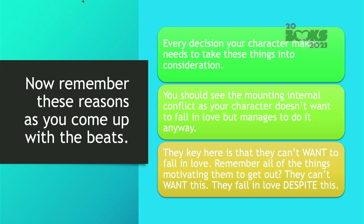Remember these reasons as you come up with your story beats. One of the problems I have seen in romances that aren't working is they have the reasons, but when the characters meet, they have this twitterpated moment and they don't put in those reasons. They don't color the scenes because of those reasons they can't be together — they have these sweet lovey-dovey moments, go on dates, and forget to put in the conflict. So every decision your character makes needs to take these things into consideration. You should see the mounting internal conflict as your character doesn't want to fall in love but manages to do it anyway.